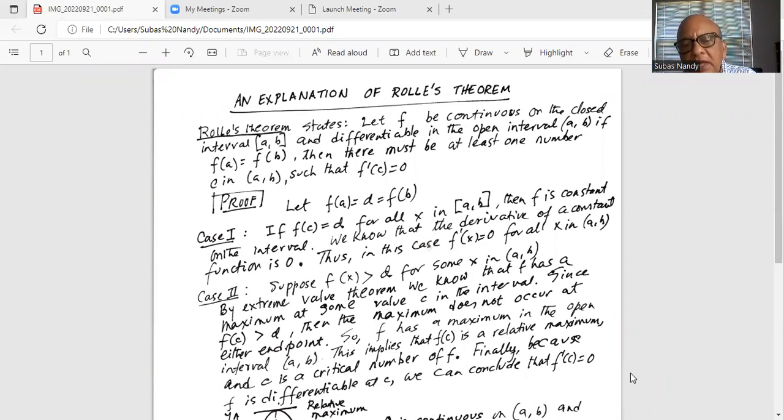Proof: let the function value at a equal d, which equals f of b. Case 1: If f(x) equals d for all x in the closed interval [a, b], then f is constant on the interval. We know that the derivative of a constant function is 0, thus in this case f prime of x equals 0 for all x in (a, b). So that's one proof.